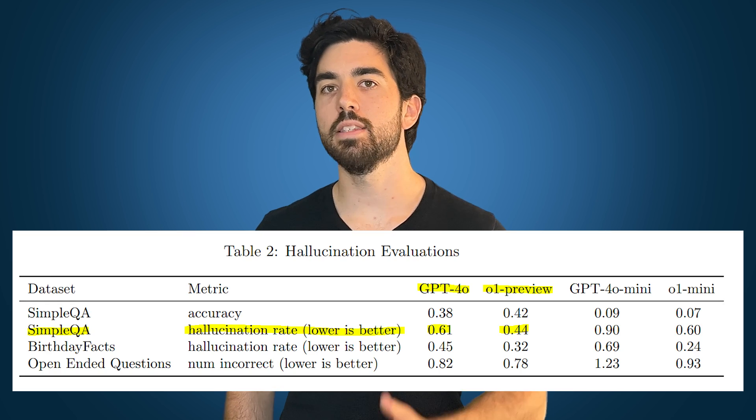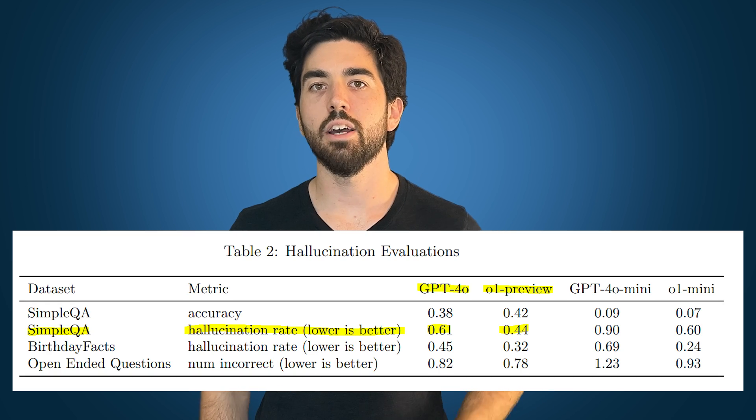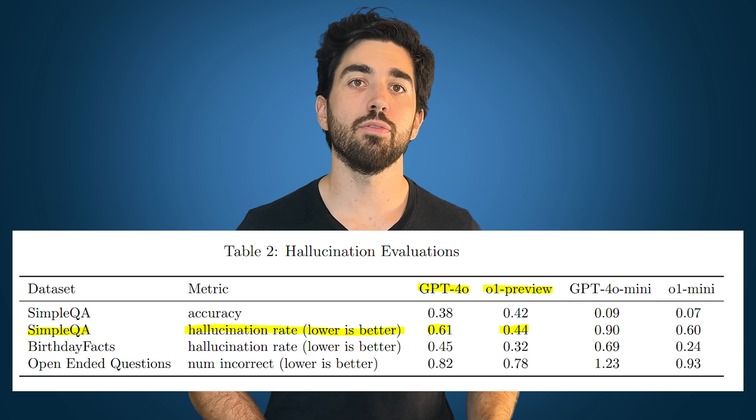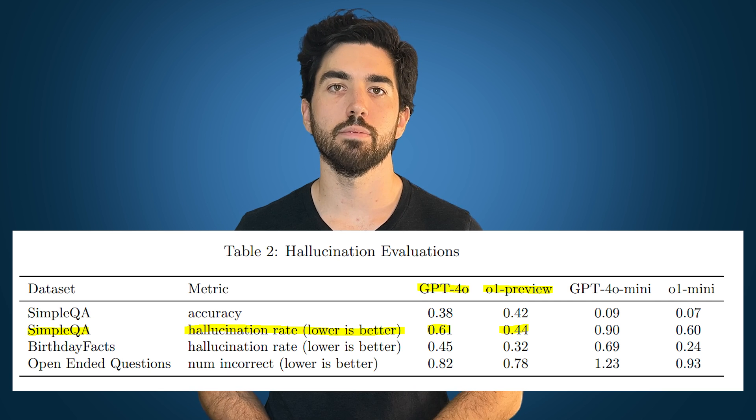Another area where O1 shines is reducing hallucinations, those moments when the model just makes stuff up. During testing, O1 hallucinated far less than GPT-4O, particularly on tasks where factual accuracy is critical. For example, in the simple QA test, O1 had a hallucination rate of just 44% compared to GPT-4O's 61%. This makes O1 more reliable for tasks where getting the facts right is essential.